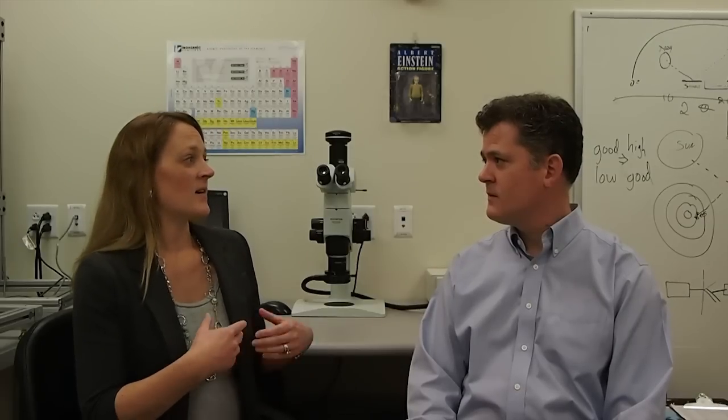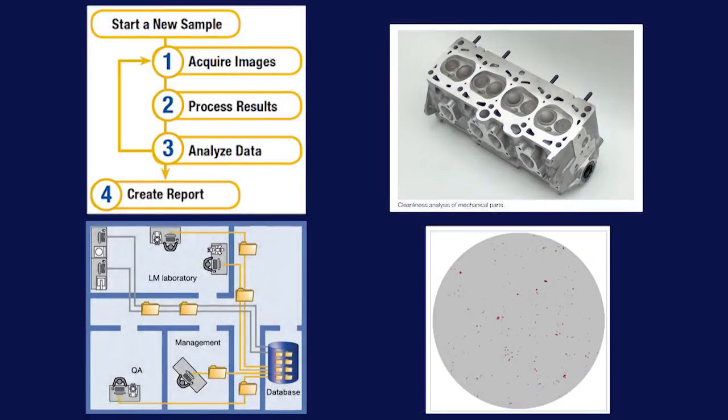Our software will automatically count all the particles in the filter media and then classify them within specific size bins based on that standard criteria so that an operator can easily see whether that specific run has passed or failed, has too many particles or is clean. Then they can feed that information back to their production line or they know if they need to rewash it.